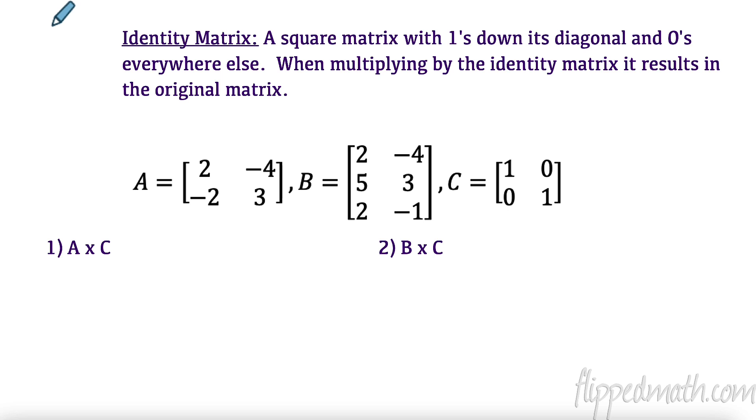So, first thing we want to talk about is having an identity matrix. And what is an identity matrix? Well, much like the number one is an identity, because when I multiply something by it, I get the same thing back. An identity matrix is very similar, but it's a square matrix with ones down its diagonals and zeros everywhere else. And when you multiply a matrix by the identity matrix, it results in the original.